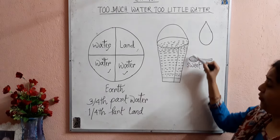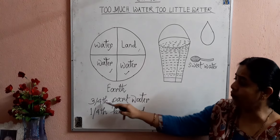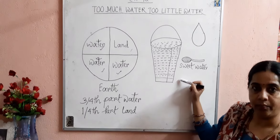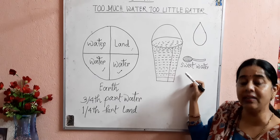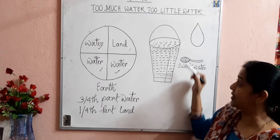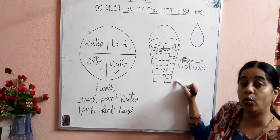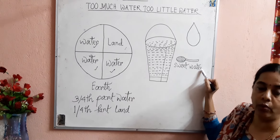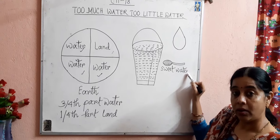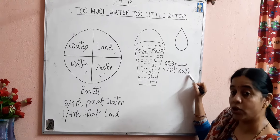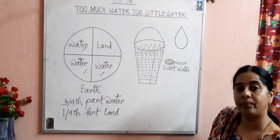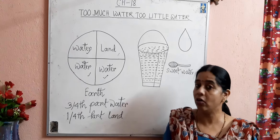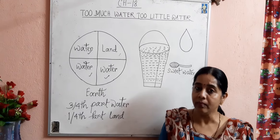Now, look at this diagram. If you think of all the water — the three-fourths of the earth's surface — as a bucket full of water, then the water that all living beings can use is only one teaspoon. That is sweet water — only one teaspoon. And we are unable to use even some part of this sweet water, as it is not clean and not healthy for human beings and animals.